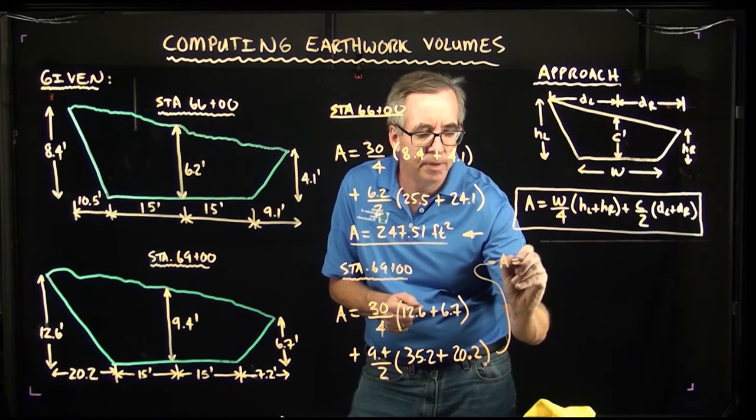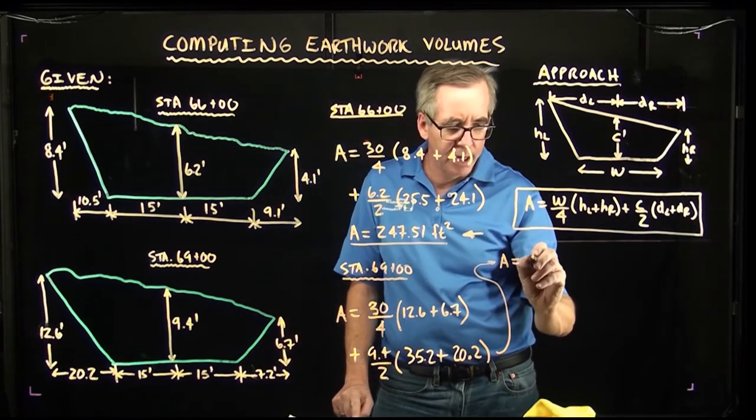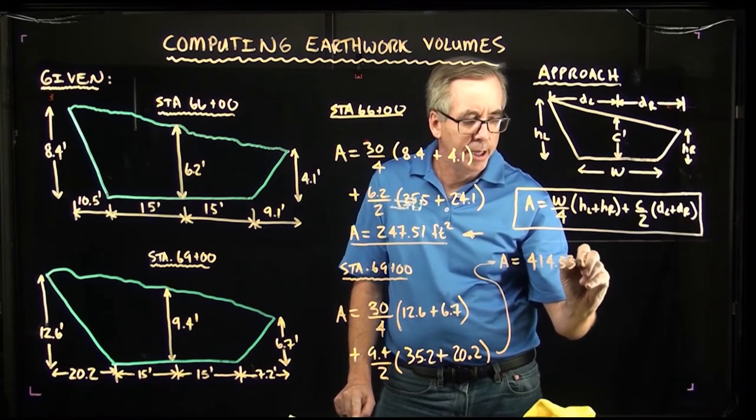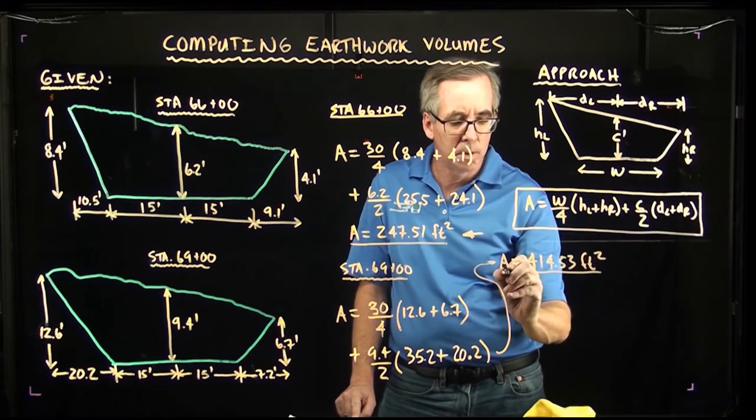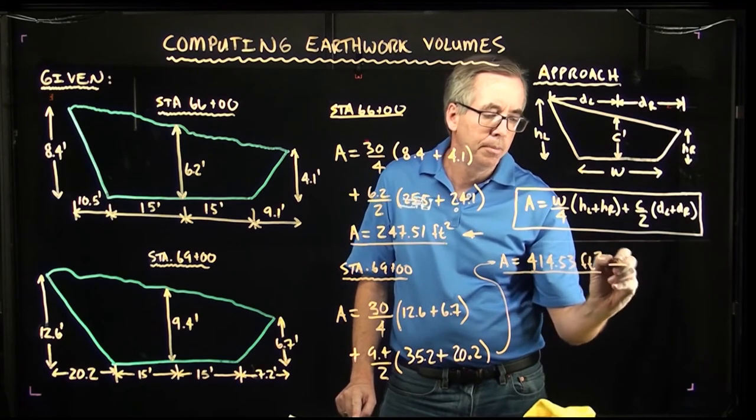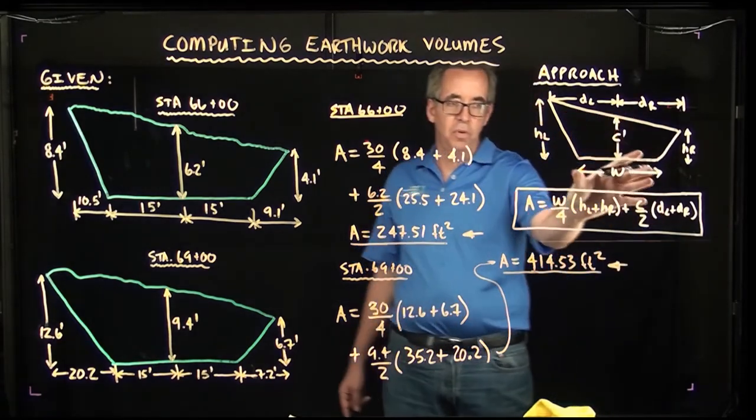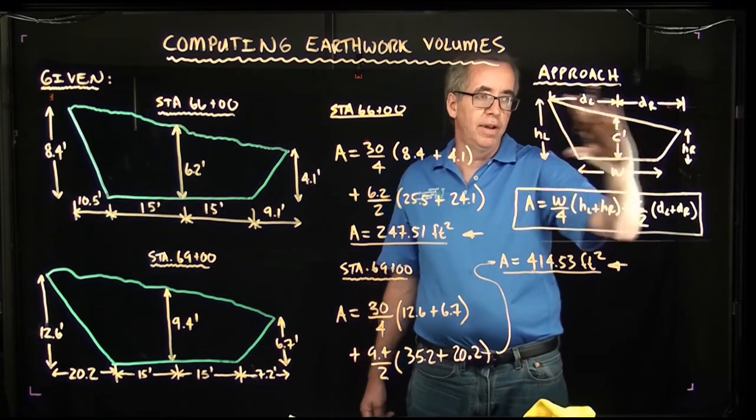this area comes out to be 414.53 square feet. I'll put an arrow on that. So we're now using this formula here in terms of the width and the top widths, the width of the base and the top widths and the heights, we've calculated the areas for each cross section.